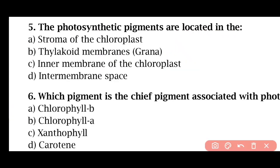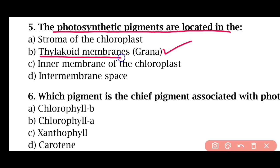Question 5: Photosynthetic pigments are located in — the stroma of chloroplast, thylakoid membranes of grana, the inner membrane of chloroplast, or intermembrane space. The correct answer is option B. Photosynthetic pigments are present in the thylakoid membranes inside the grana.